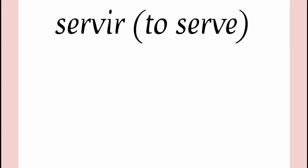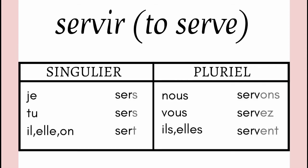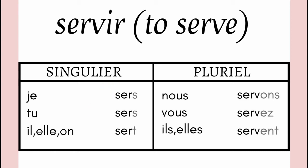Let's move to the next verb which is SERVIR. SERVIR means to serve. And how this is conjugated: je sers, tu sers, il sert, elle sert, nous servons, vous servez, ils servent, elles servent. The singular radical is S-E-R and the radical of plural subjects is also S-E-R-V.